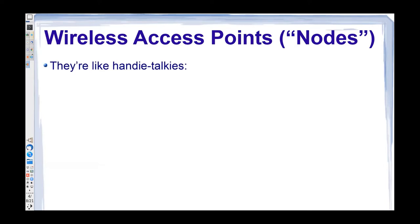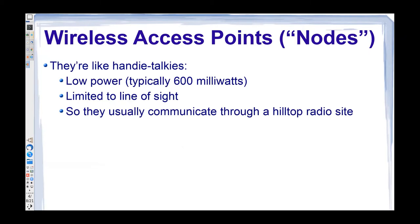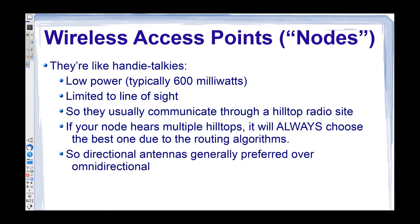You have to consider the nodes like handy talkies — they're low power, typically around 600 milliwatts. In a lot of cases you can run less; a few of the MikroTik units run more. They are definitely limited to line of sight. In FM repeaters you can get away with knife-edge refraction, but not here. These usually communicate like a handy talkie through a hilltop radio site. Because of the routing protocols and link comparisons, if your node happens to hear two hilltops on the same channel, it will always choose the best one due to the routing algorithms. We generally recommend a directional antenna over an omni.